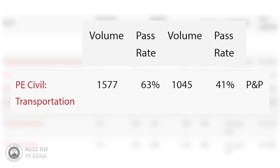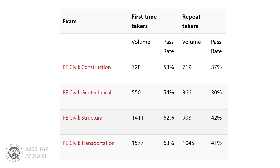So maybe you're still not sure if this is for you. Well, let's look at the passing rates for the Civil Transportation CBT exam. As of December 2021, the PE Civil Transportation depth exam has a 63% pass rate for first-time takers and a 41% pass rate for repeat takers. You can view the full list of pass rates at the NCEES website. Now let's compare them to the PE Civil Geotechnical, Construction, and Structural depth exams discussed in our previous videos. The construction depth portion had a 53% pass rate for first-time takers and a 37% pass rate for repeat takers. The geotechnical depth portion had a 54% pass rate for first-time takers and a 30% pass rate for repeat takers. The structural depth has a 62% pass rate for first-time takers and a 42% pass rate for repeat takers. So you can see, the PE Civil Transportation exam has the highest pass rate so far at 63% for first-time takers.